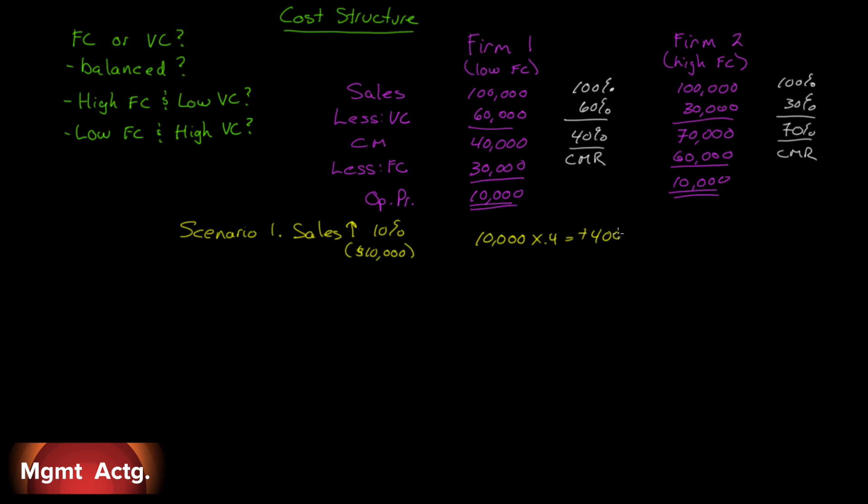But for Firm 2, it's $10,000 times 0.7. That contribution margin will increase $7,000. So Firm 2 looks like the winner on the upside. If sales are going to increase from here, we want to be in Firm 2. We want high fixed costs and low variable costs.